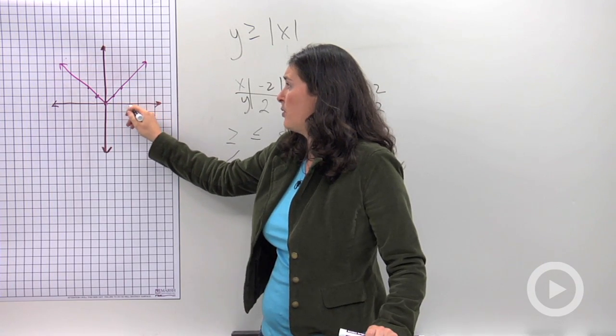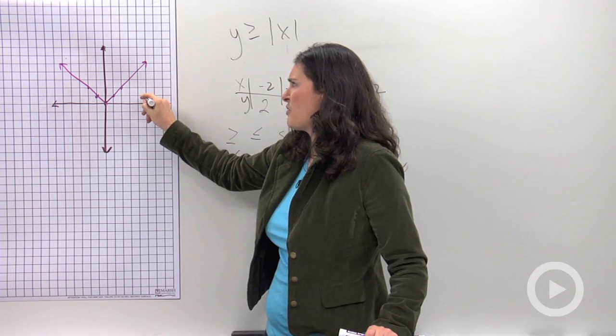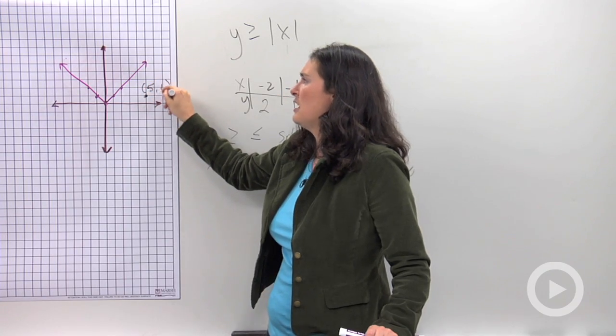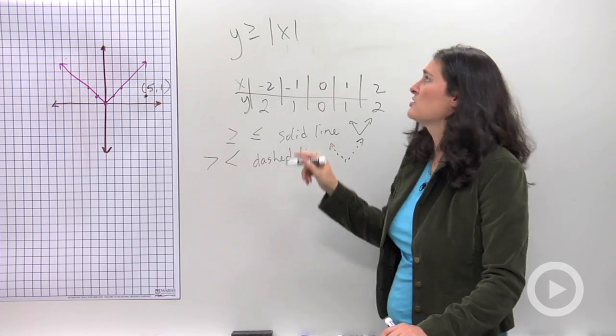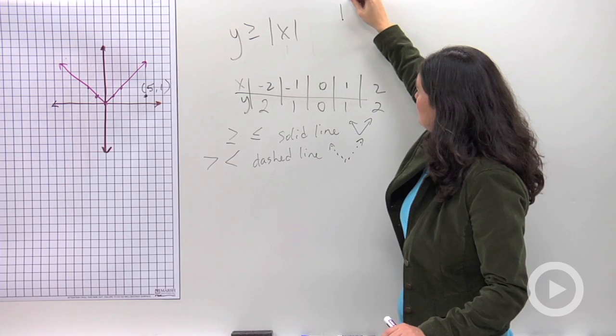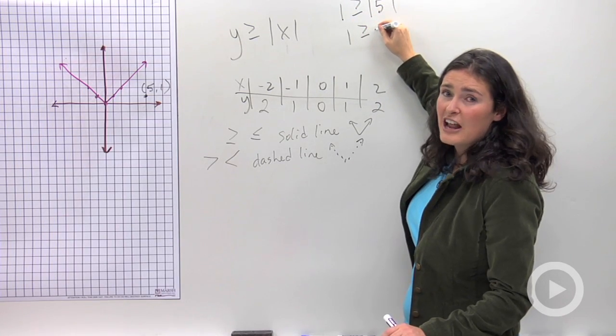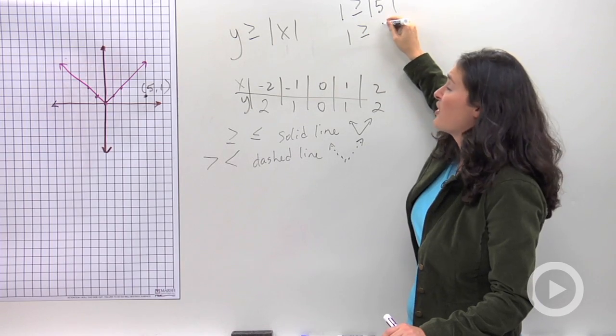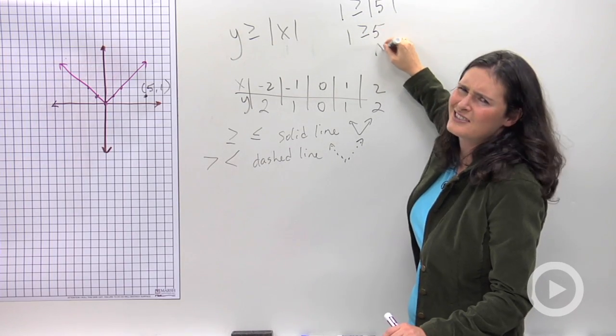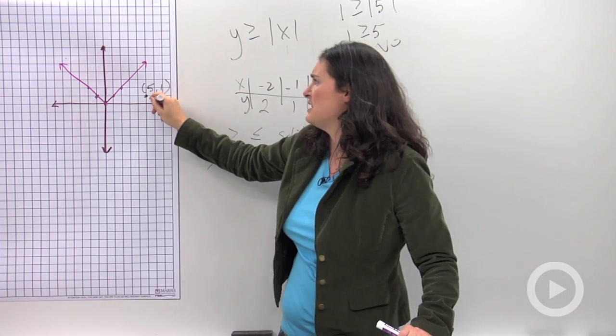Let's just say I picked the point 5, 1. I just randomly chose that point. You can use any point you want to. My x number is 5, my y number is 1. I'm going to put that in here. Is it true that 1 is greater than or equal to 5? No. That's not true. This point is a no.